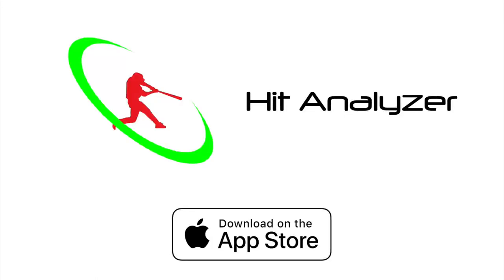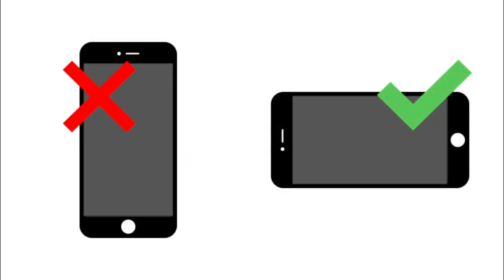Hey, this is Will Bowen with Performance Analytics, and in this video I'm going to walk you through how easy it is to record videos for Hit Analyzer. Hit Analyzer really only has a few camera requirements you'll need to know before you start analyzing videos. The first is you need to ensure you have your phone or your tablet oriented correctly before recording. Hit Analyzer will only accept videos for analysis which have been recorded in landscape mode and not portrait.